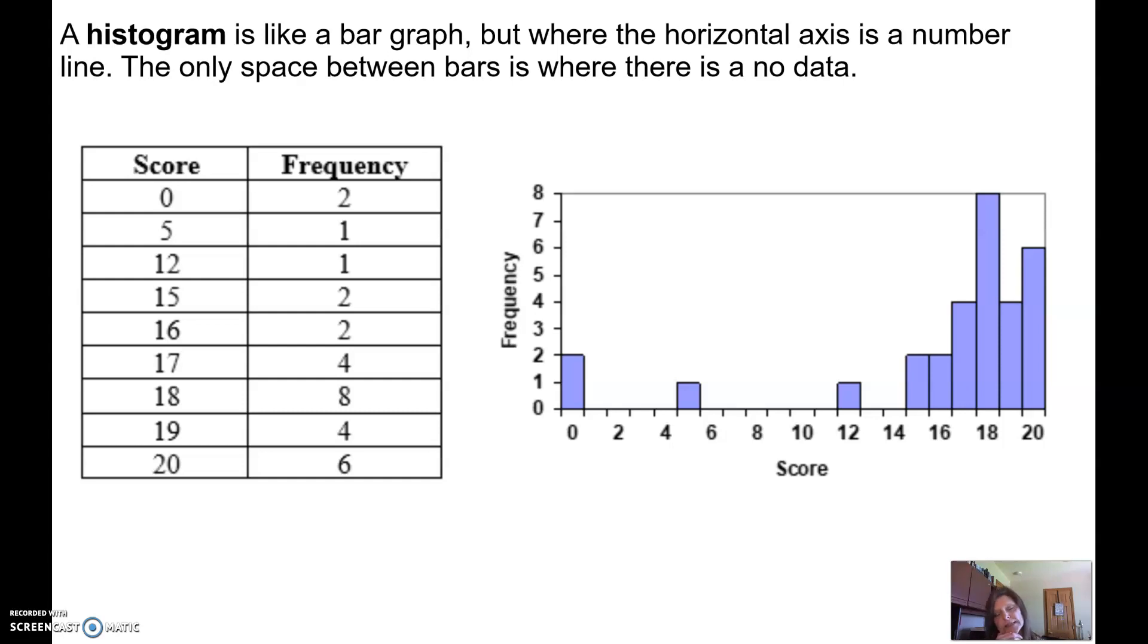The other difference between this and a bar graph is that the little bars themselves are right next to each other. There's no gaps in them except like we do have a gap here at the beginning a huge gap but then if you look at the frequency table you notice we have two that got a zero and one they got a five there's nothing in between so there's no bars in between there. But then over here when we're looking at okay well there were two they got a 15 and two they got a 16 those bars are right next to one another. So it's very similar but the key difference is you have to have numbers on the horizontal axis and you keep the bars nice and tight together.